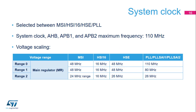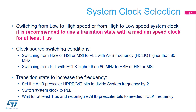The system clock is selected between the MSI, HSI16, HSE, and PLL output. MSI is chosen by default. The maximum system clock frequency is 110 MHz. The APB1 and APB2 bus frequencies are also up to 110 MHz. The voltage scaling range is adjusted to HCLK frequency as follows: the system clock is limited to 110 MHz in range 0 mode, 80 MHz in range 1 mode, and 26 MHz in range 2 mode. In STM32L5 devices, it is recommended to use a transition state when switching from low to high speed or from high to low speed system clock.